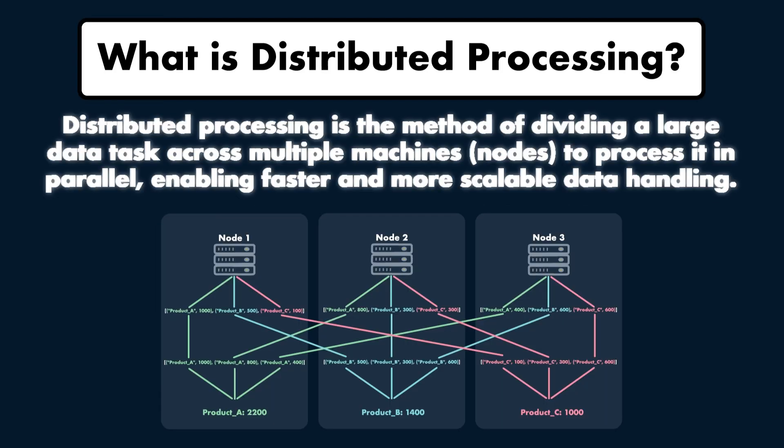Now what do I mean by distributed processing? Let's break it down. Imagine you have a massive dataset — billions of rows of customer transactions. Processing that on a single computer could take hours, maybe even days. But with Spark, that workload is split across multiple machines. Each machine works on a portion of the data in parallel, drastically reducing processing time.